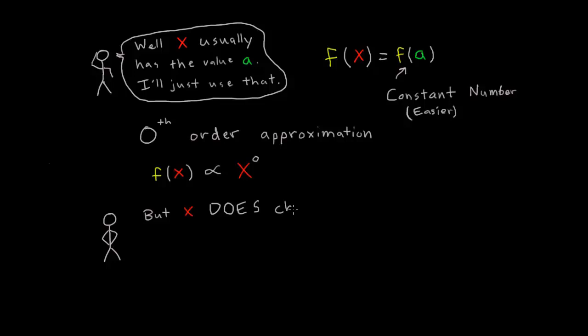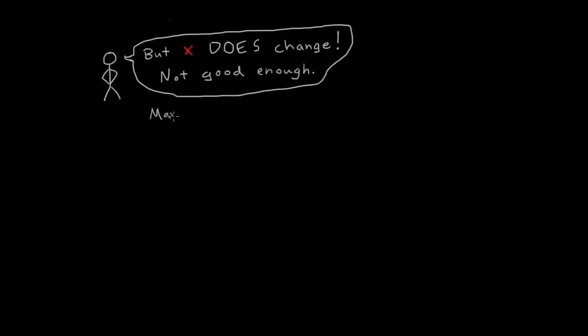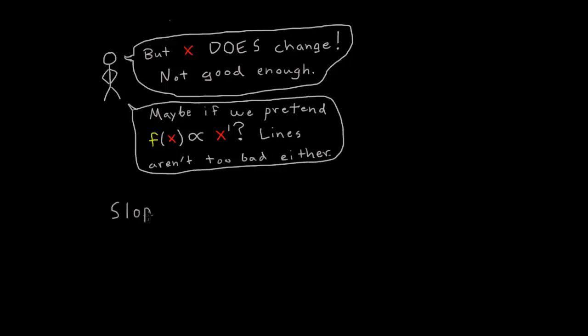But that doesn't work so well in this case, so Taylor has to try something a little more sophisticated. Maybe pretending that F of X is a line? The first thing to do when defining a line is to find a slope to use.